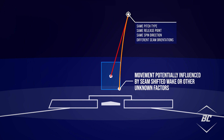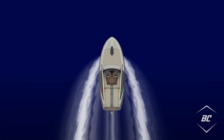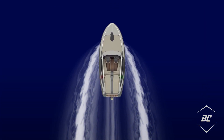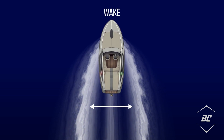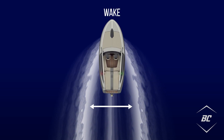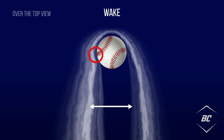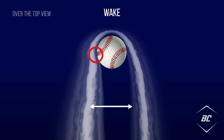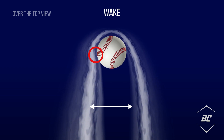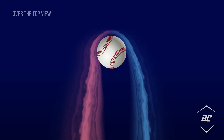Having different seam orientations is part of what creates varying aerodynamic and seam shifted wake effects. The wake of a pitch is the path that the displaced air takes as it moves around and behind the ball — think of the flow of water behind a speedboat. The raised seams on an otherwise smooth baseball disrupt the airflow around the ball at certain orientations, which causes an asymmetrical wake behind the ball.